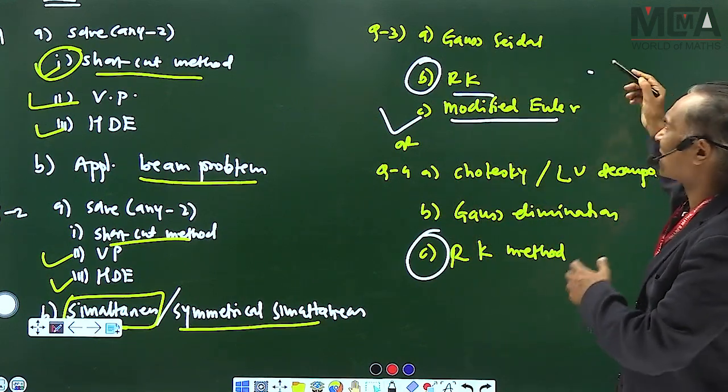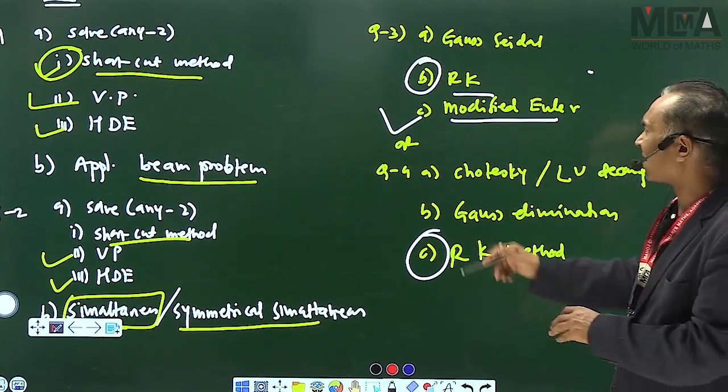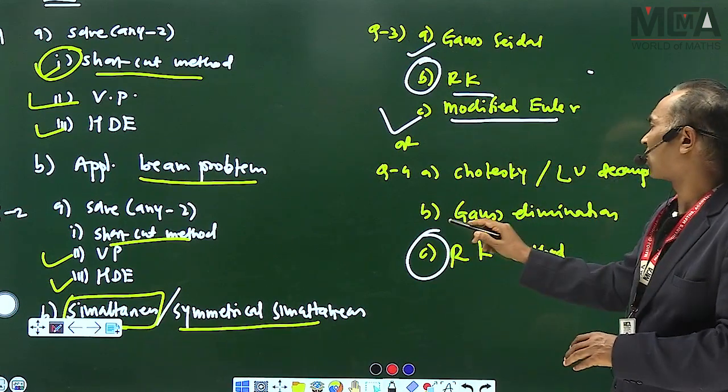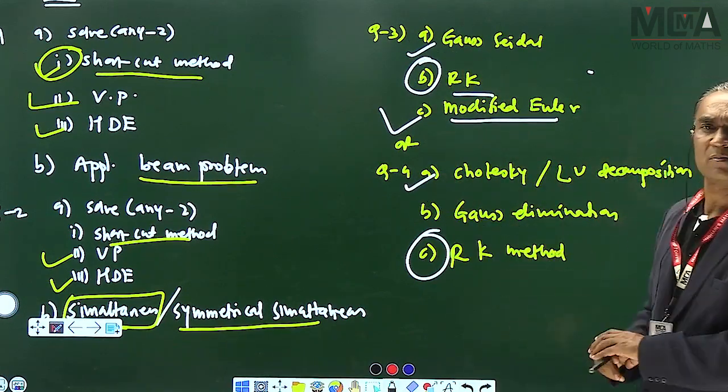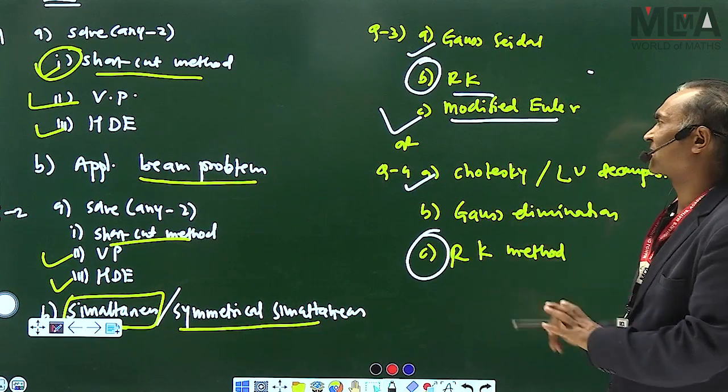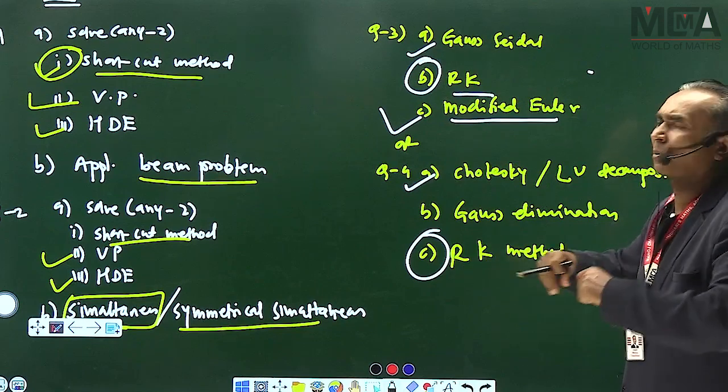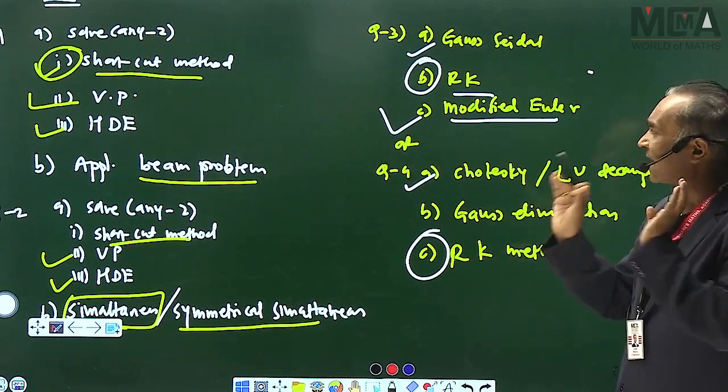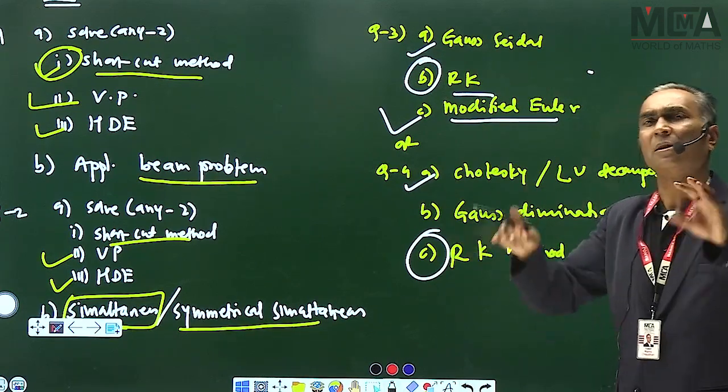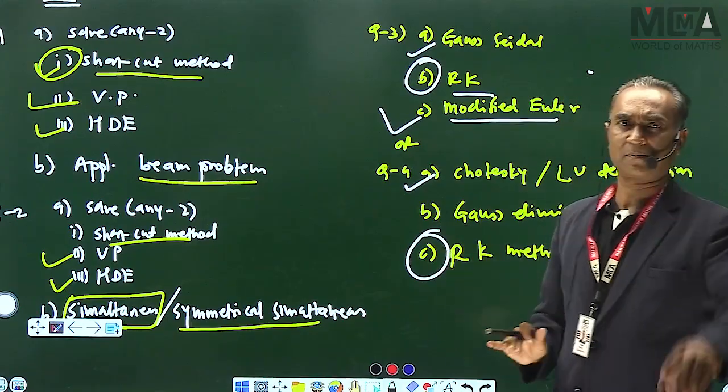And if you get time, then Gauss Elimination and Cholesky, etc. That will also be fixed in the exam. But the suggestion is, RK and Modified, fix this. The rest is the same. I guarantee you that you will not have any mistakes. It will be 101% score. Thank you.